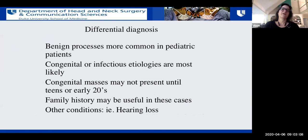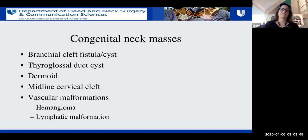In general, benign processes are much more common in pediatric patients. You can see malignancies, but generally you're going to think more in terms of benign processes. Infectious and congenital etiologies are most likely. One thing to bear in mind is that congenital neck masses may not present until the teenage years or early 20s. Family history can be helpful — for example, if there's a family history of hearing loss or the child failed a newborn hearing screen, you may be thinking of branchial-oto-renal syndrome. We'll talk about branchial cleft, thyroglossal duct cysts, dermoids, midline cervical clefts, and vascular malformations.